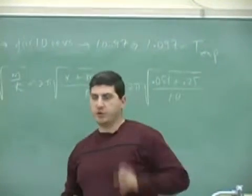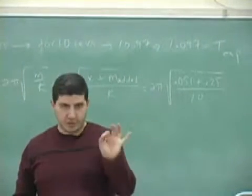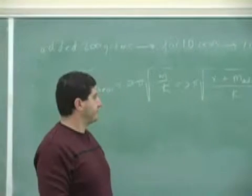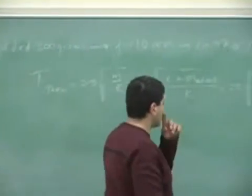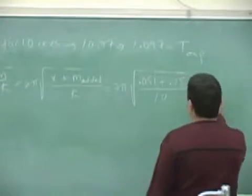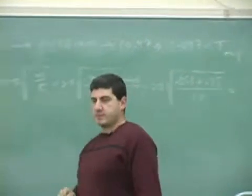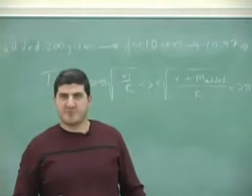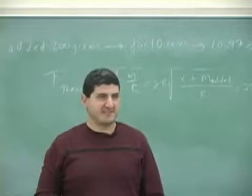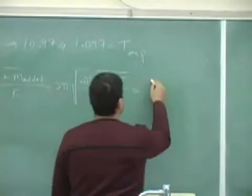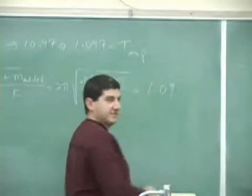So now if the formula is correct, it should predict the period very close to what we got. Let's see here, the moment of truth. 1.09? Wow.